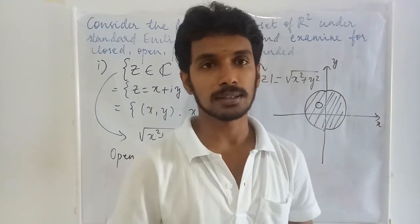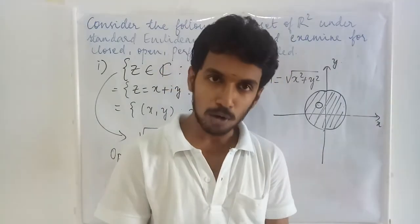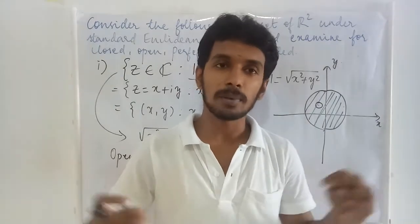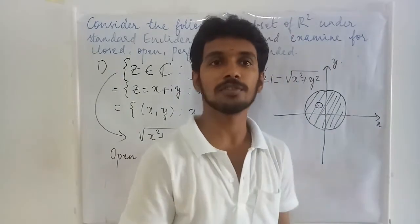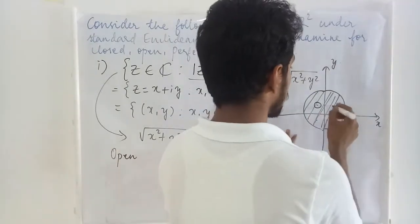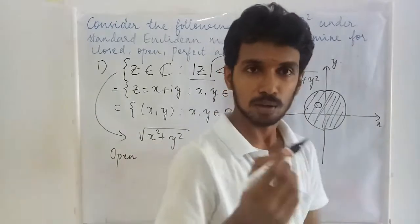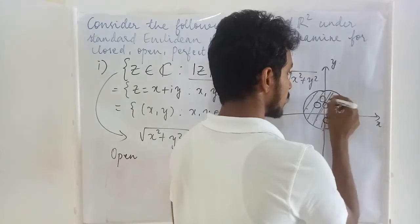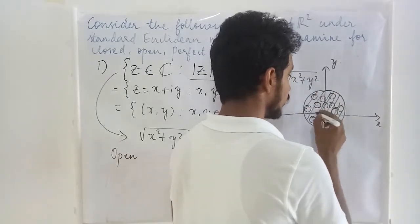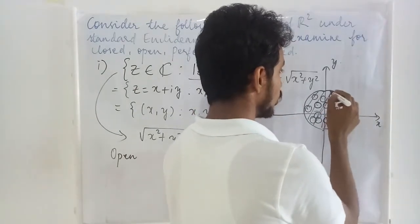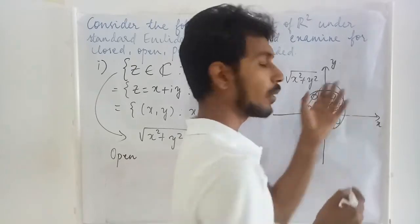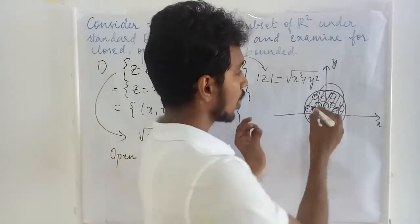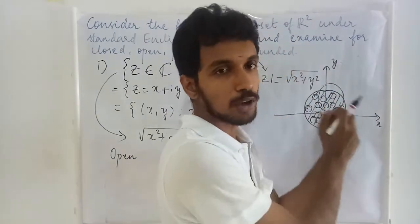Now we will have to identify the limit points. In order to identify the limit points, you are going to take a neighborhood — all possible neighborhoods — and in all possible neighborhoods you must have at least one point of this set. Whatever may be the points you take inside this circle, even if you take a very large radius, you may have some points outside but there are many points inside that set. Therefore, all your points inside the circle will be your limit points.